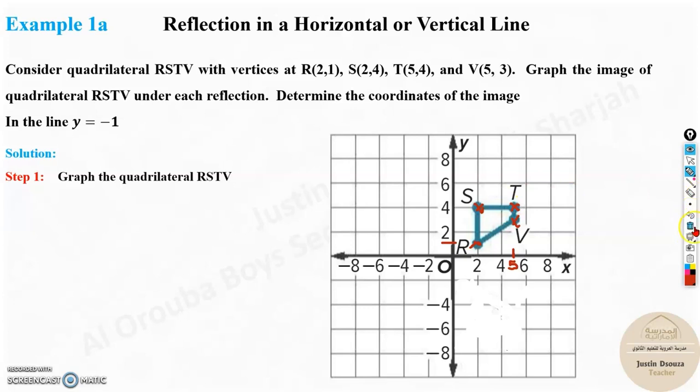Now we need to reflect this image along y equals -1. Draw a line at -1. This is -1. You must make sure whatever is this distance - this is 2 units to point R - that must be drawn over here. There must be 2 units down. And how much distance is from this line to S? It will be 4 plus 1, which is 5. So it will be 5 units down from here: 1, 2, 3, 4, 5.